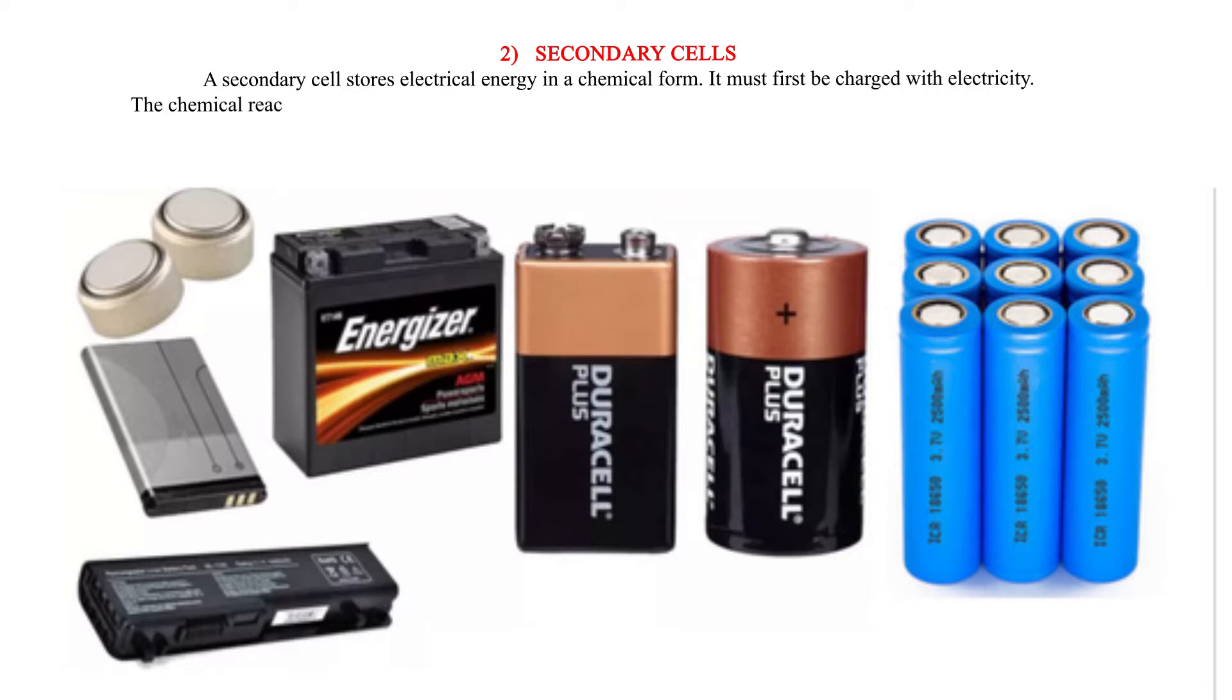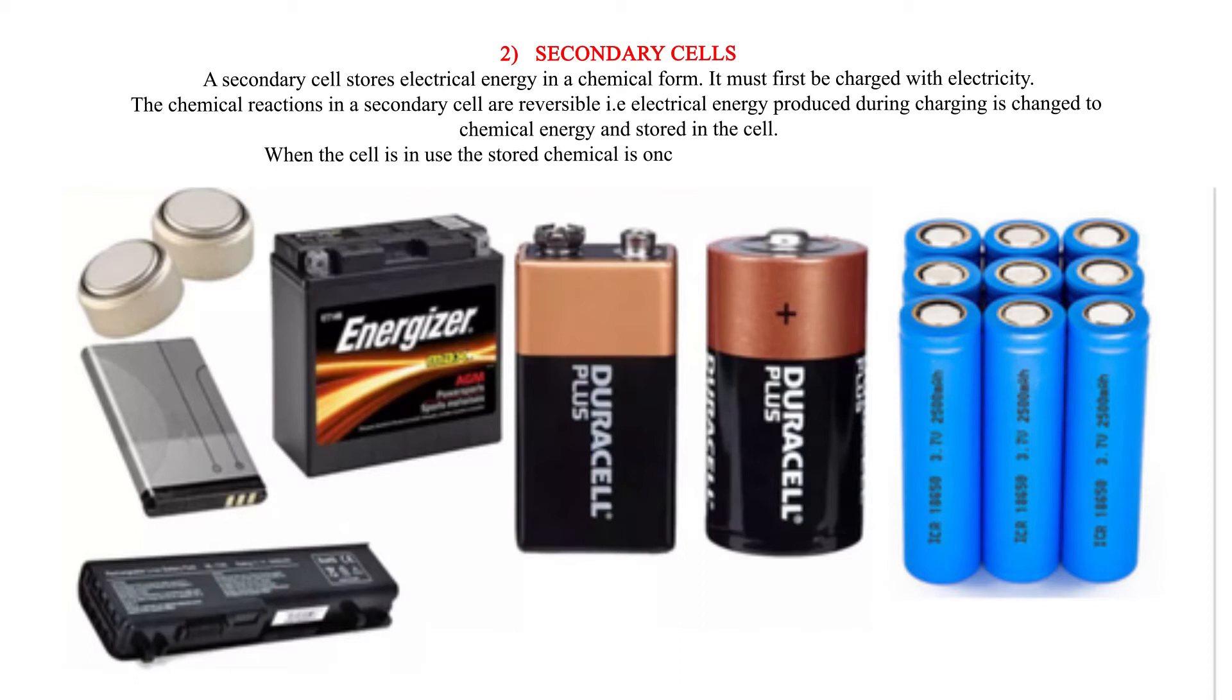The chemical reactions in a secondary cell are reversible. Electrical energy produced during charging is changed to chemical energy and stored in the cell. When the cell is in use, the stored chemical energy is once again changed to electrical energy.